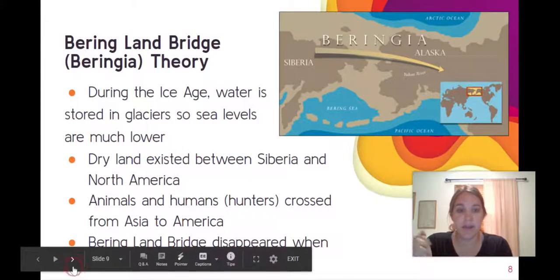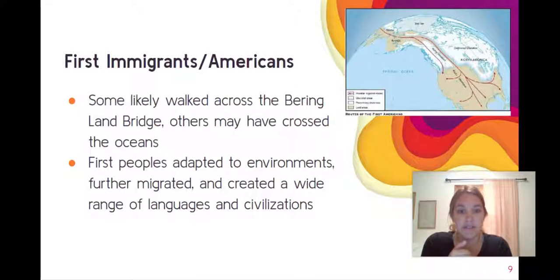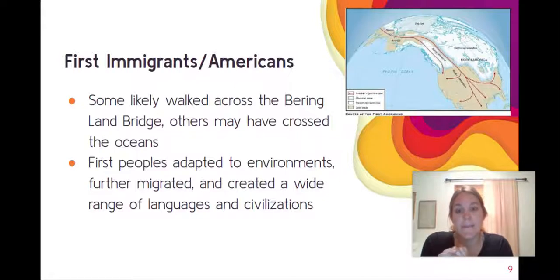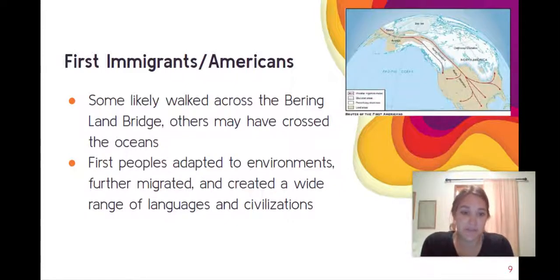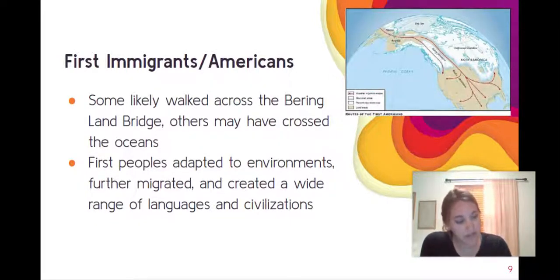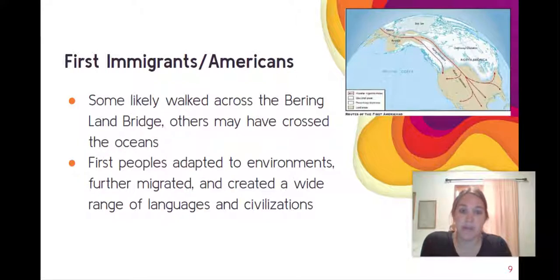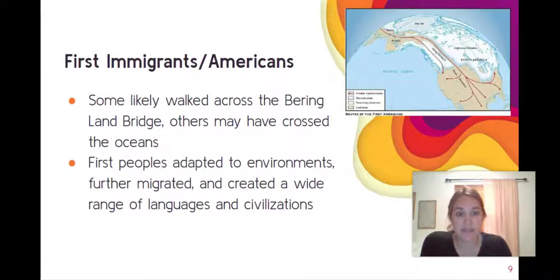Migration would have continued southward through the continent, following plants and animals, and peoples adapted to their environments as they encountered new places with different natural resources. This is a theory, and I address it because it's the one most likely found in your AP book. However, many Native American groups don't subscribe to this theory — they believe others may have crossed the oceans by boat. It's difficult to know for certain, but we do know there are some connections between the peoples of Siberia and the first Americans.